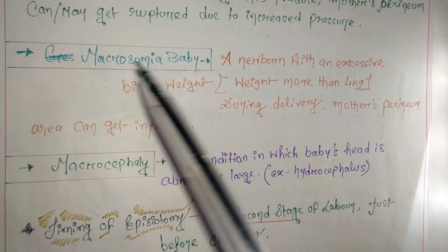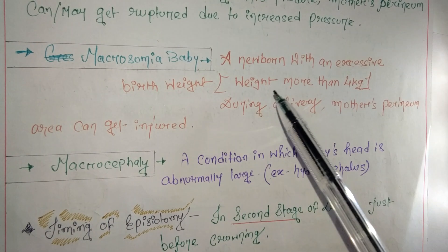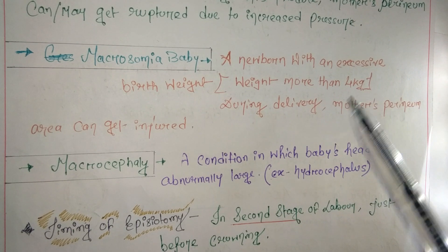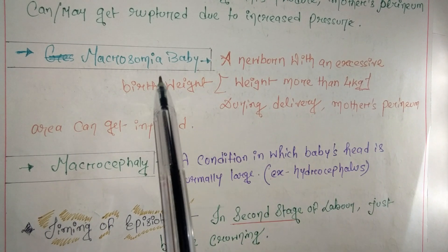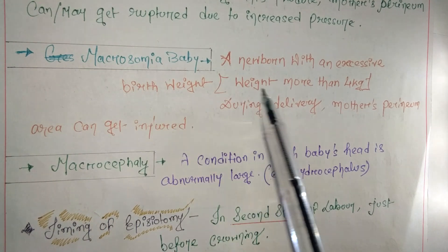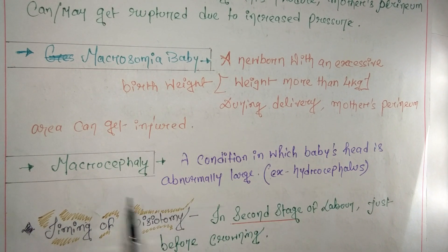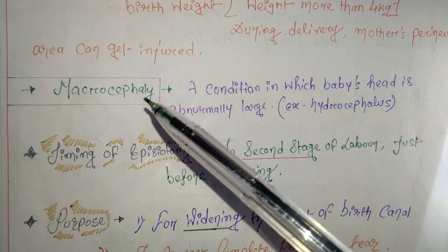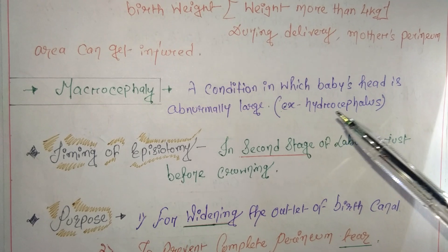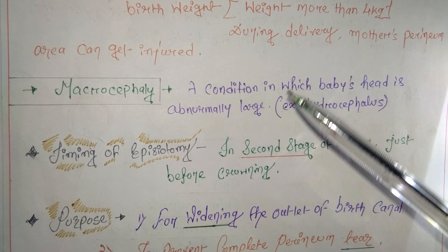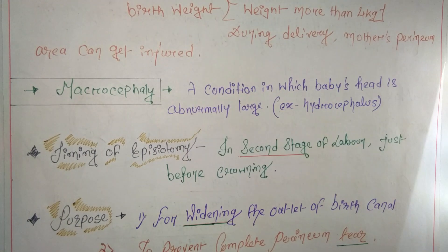Fourth indication: macrosomia baby — a newborn with excessive birth weight, more than four kg. There is a high risk of perineal tear in such cases, so episiotomy is needed. Fifth indication: macrocephaly — a condition where the baby's head is abnormally large, such as in hydrocephalus. Episiotomy is performed to avoid injury in these situations.